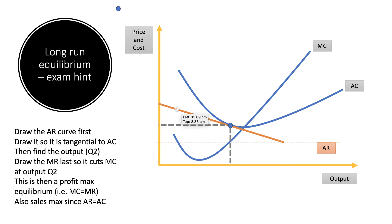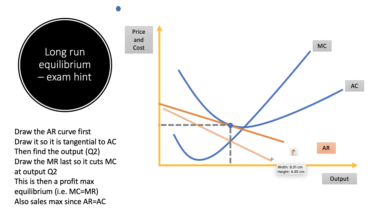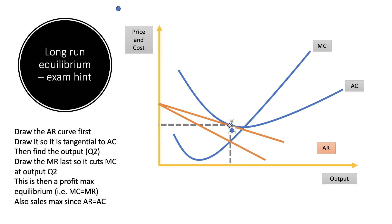In the exam, draw the average revenue curve first, so that it is tangential to the average cost curve. Find the output — call it Q2 — and then draw the marginal revenue curve so it cuts the marginal cost curve at the same output, making it a profit-maximization point. The trick is to draw the average revenue curve first, then position the marginal revenue curve to cut MC accordingly, without worrying too much about getting the precise double-gradient effect exactly right.